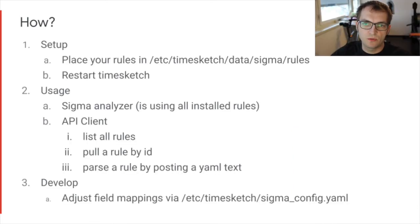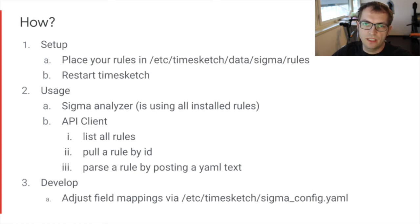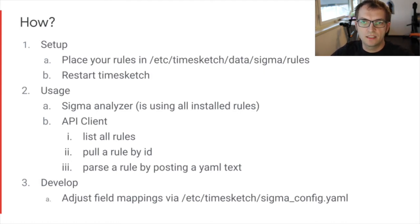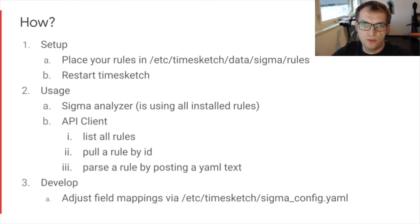So, how can you make use of Sigma rules in Timesketch? First, you need to place your rules in /etc/timesketch/data/sigma-rules or any other folder that you configured in your Timesketch config file. Once that is done, you need to restart Timesketch. To use the rules, you can either use the Sigma analyzer. This will search events for every installed rule and apply the rule file name as a label to the event. After that has been finished, you can search for matching events just by label and you don't have to rerun the rules.